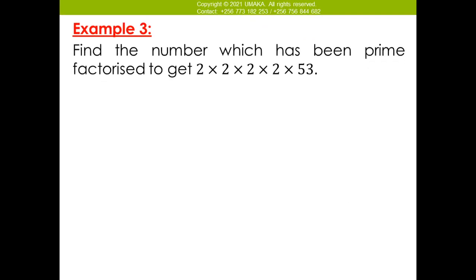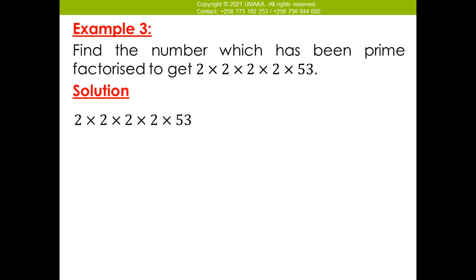Dear learners, let's look at the last example. I believe with the first two you have already understood. It reads: find the number which has been prime factorized to get 2 times 2 times 2 times 2 times 5 times 3. Can you tell this form? This is what we call multiplication form — the answer has been expressed in multiplication form. So which number was prime factorized to get the above? Just pair, because we don't have the power or the subscript. Express it with brackets: 2 times 2, then 2 times 2, as you can see.